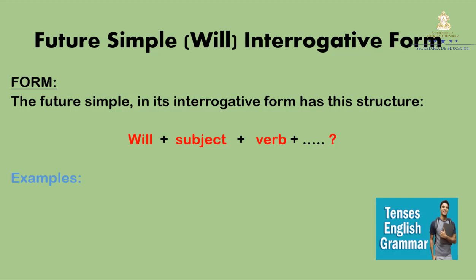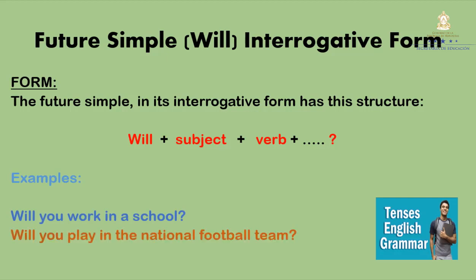Now look at these examples. Will you work in a school? Will you play in the national football team? Will she wear a dress? As you can see, we are using the correct structure: will, plus subject, plus verb, plus complement, and at the end, the question mark.